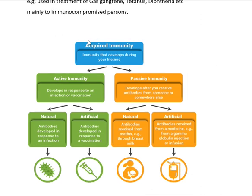Quick review: Acquired immunity is of two types — actively acquired immunity and passively acquired immunity — each occurring by natural or artificial method. Natural active immunity means antibodies developed in response to natural infection. Artificial active immunity is developed through vaccination. Natural passive immunity is passage of antibodies from mother to fetus or infant. Artificial passive immunity is ready-made antibodies supplied from donor to recipient.